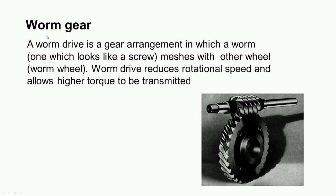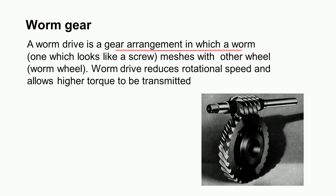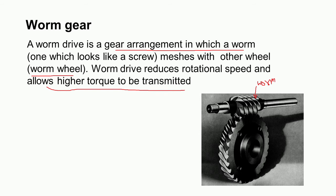The worm gear consists of a worm, which looks like a screw, meshing with a worm wheel. The worm drive reduces rotational speed and allows higher torque to be transmitted.